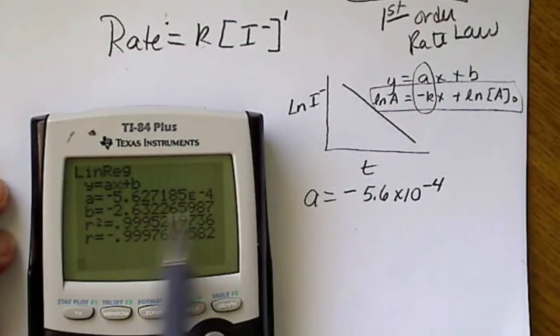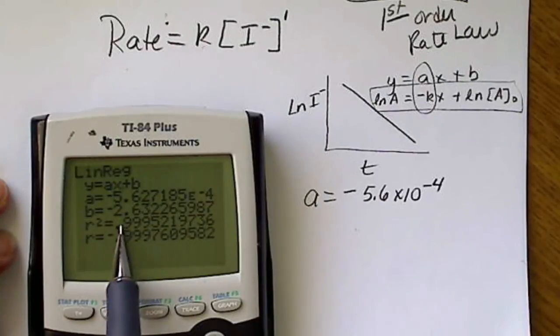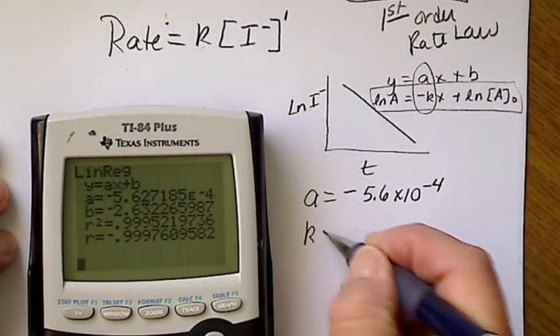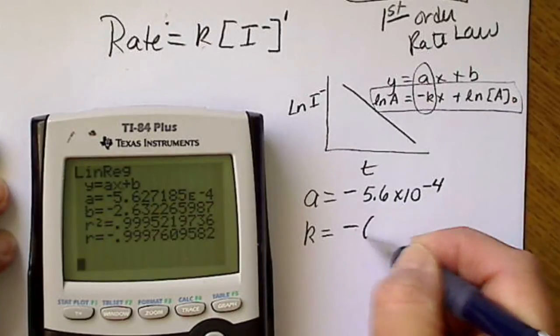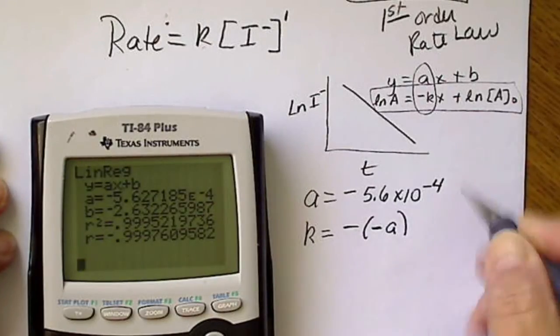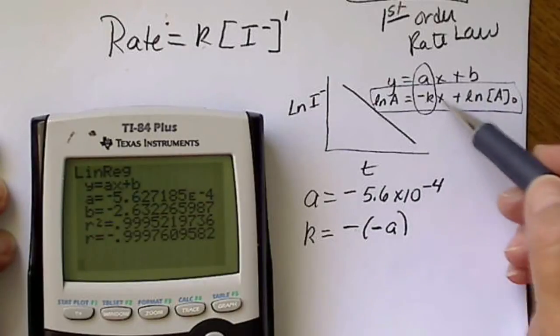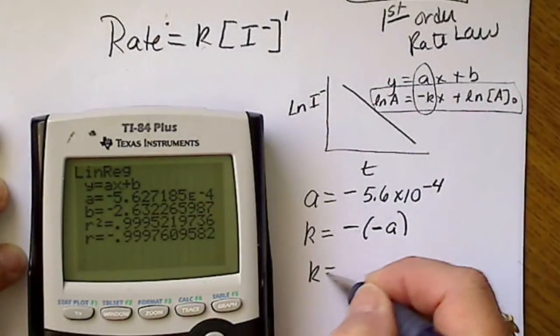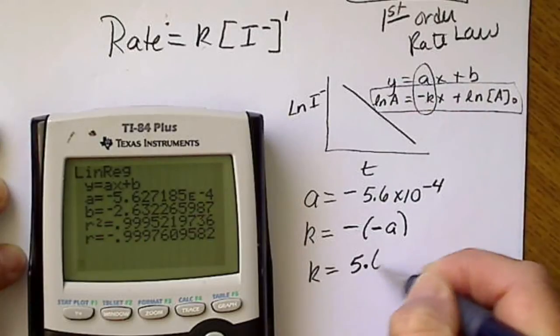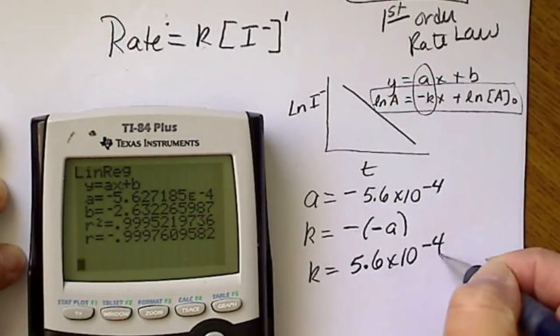Again, that comes from the slope of the line. We don't really care about the y-intercept here. We're just concerned about the slope. That means my rate constant, which is the opposite of a, you can see that from this relationship here, k is going to be a positive 5.6 times 10 to the minus 4.